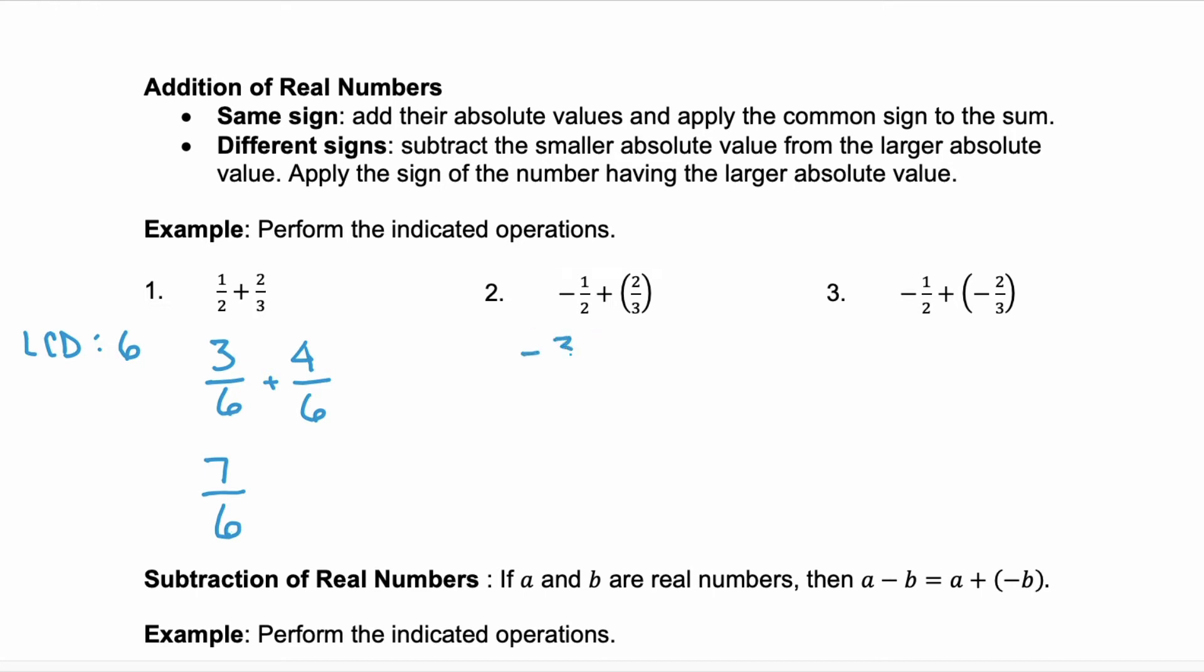Again, in problem 2, we need to go to the common denominator. So negative 3/6 plus a 4/6. We're going to take 4/6 and subtract the 3/6 because the 4/6 in absolute value is larger than the absolute value of negative 3/6. And this will give us 1/6. And because the 4/6 was positive and it's the larger, it stays positive.